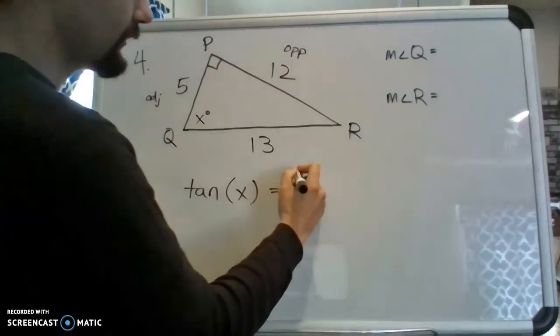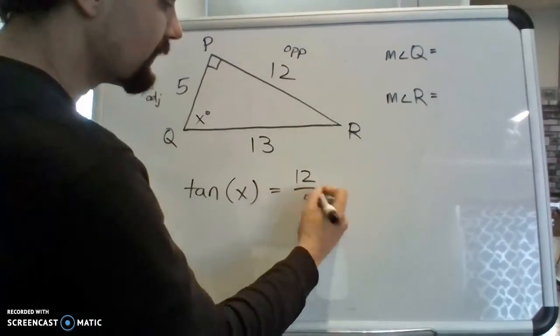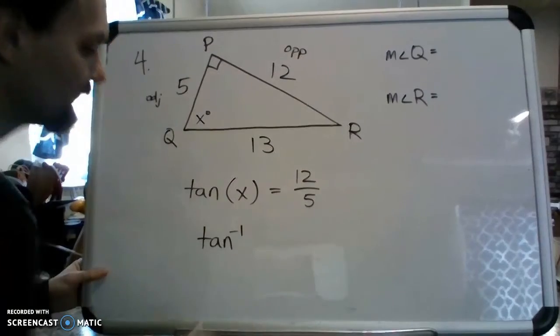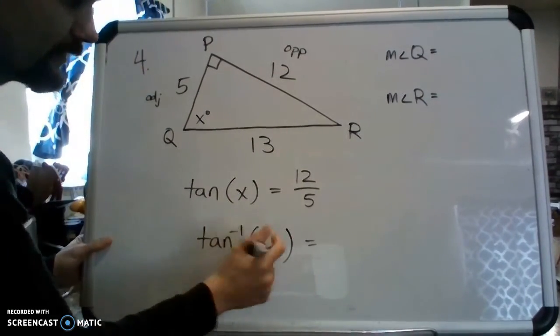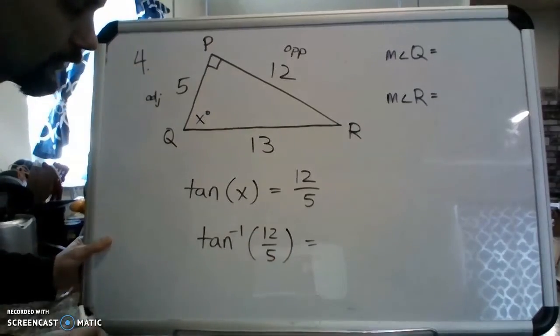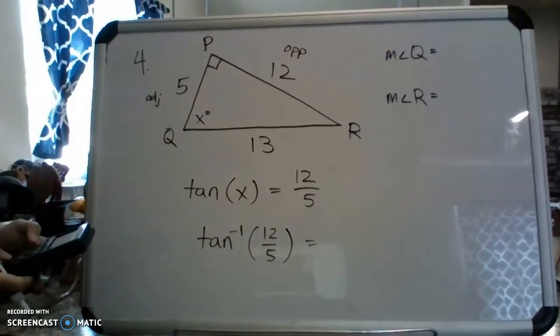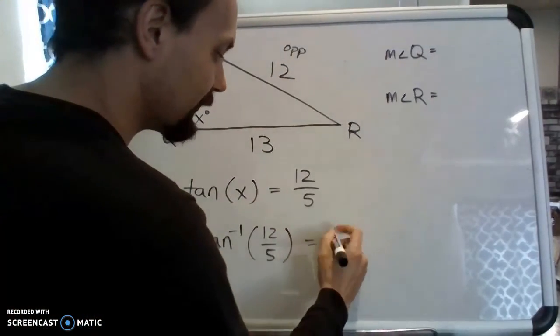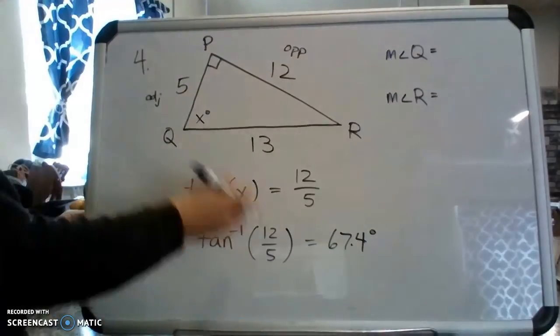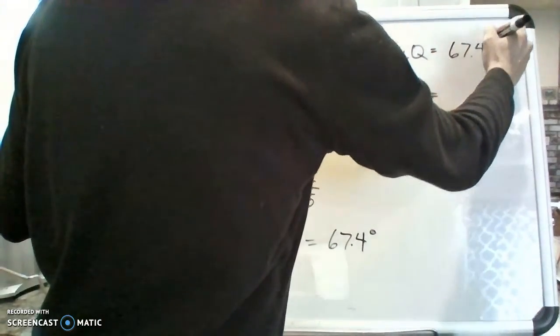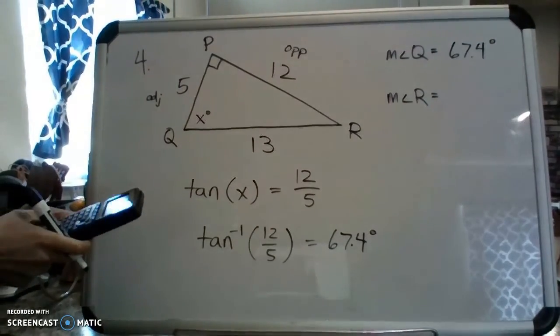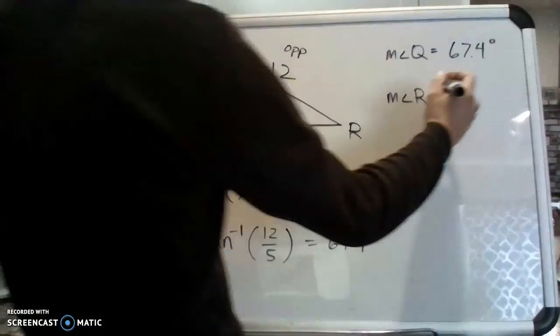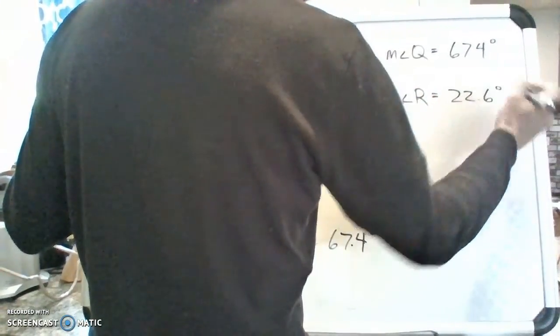Normally we would say tangent of the angle, the angle we don't know, is equal to the opposite side, 12, over the adjacent side, 5. But because we don't know the angle, we have to then switch this over to tangent inverse instead. And instead of putting the angle inside tangent inverse, we put the ratio inside. So use your calculator then to evaluate tangent inverse of 12 over 5. It comes out to be approximately 67.4 degrees. So that gives us measure of angle Q. And then once again, use the 180 degree relationship. So 180, subtract the 90 degree angle, and subtract the 67.4 degree angle, leaving us with measure of angle R as 22.6 degrees.